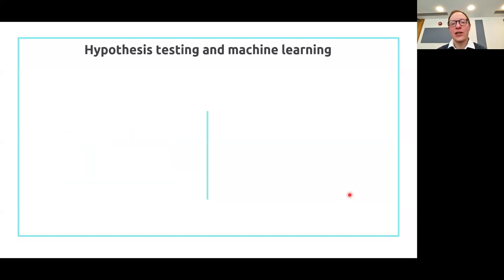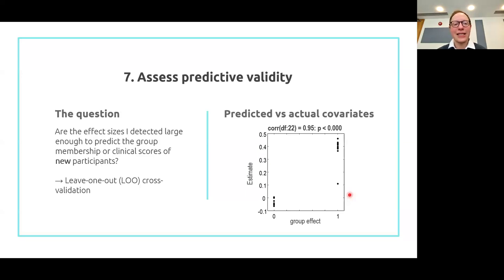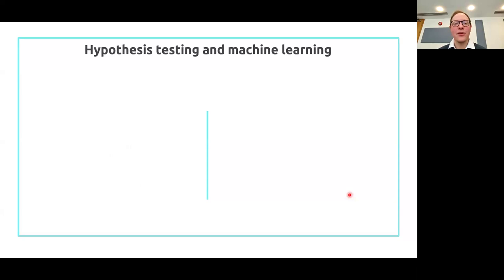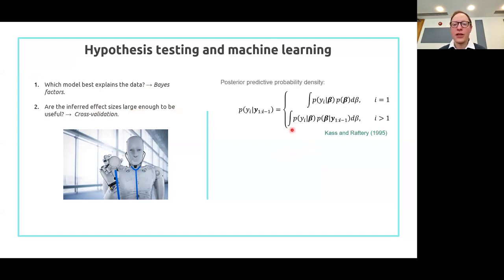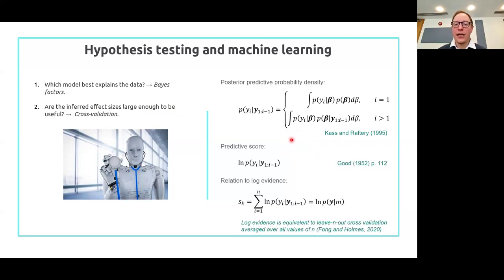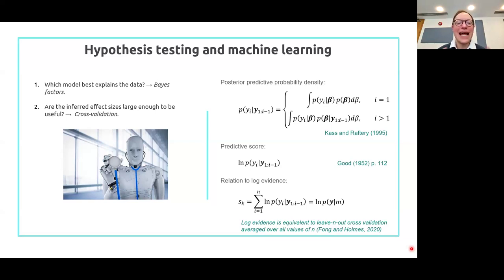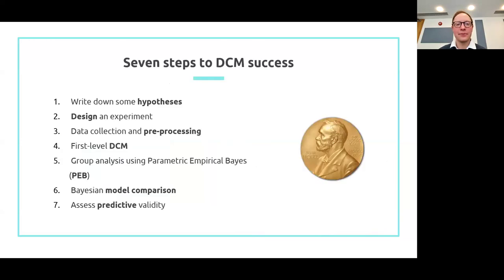You might ask: what's the formal relationship between leave-one-out cross-validation and Bayesian model comparison — are they completely separate things? The good news is there is a formal relationship. The log evidence is equivalent to leave-n-out cross-validation averaged over all values of n. So if you select between models and choose the one with the highest log evidence in your Bayesian model comparison, you are automatically choosing the model that will have the best predictive validity. Those two steps are formally connected.